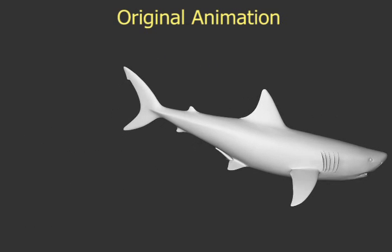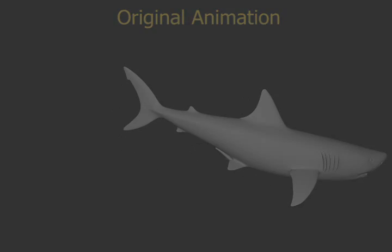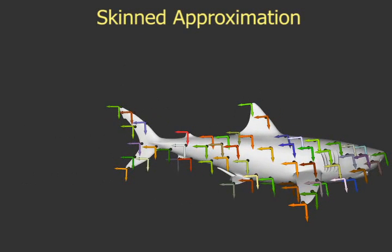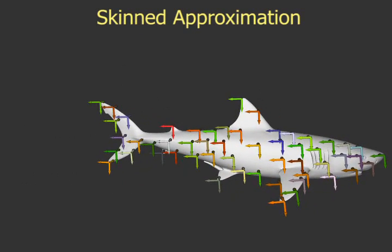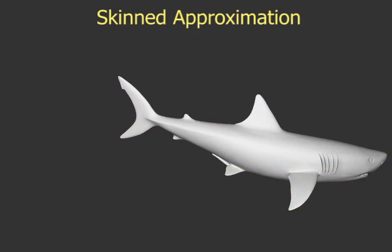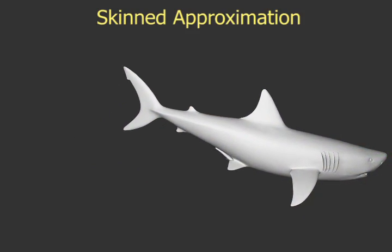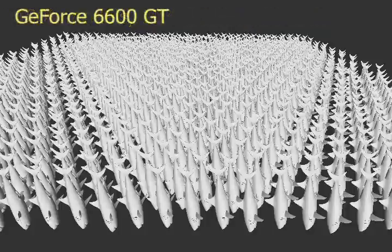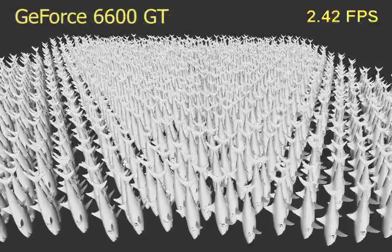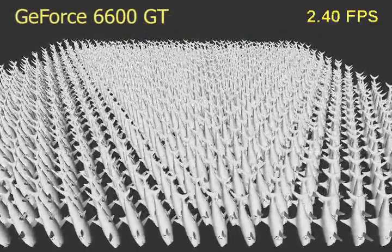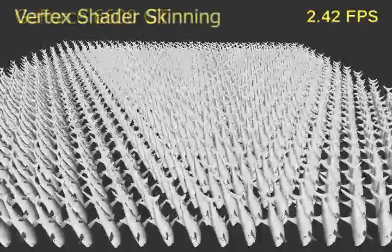One of the benefits of skinned approximations is that they can be efficiently rendered using graphics hardware. Because we use a fast matrix palette skinning method, our algorithm performs almost four times faster than the classic vertex buffer object approach.